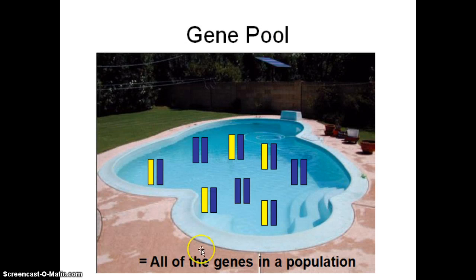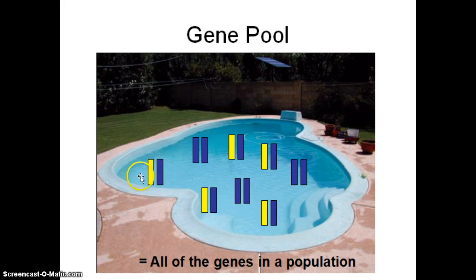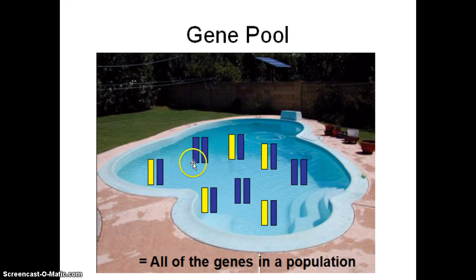The gene pool definition is all the genes in a population. What I tried to show here is that this particular person would be heterozygous for this trait — these are the two alleles this person is contributing to the gene pool. Someone like this would be homozygous for this trait, and we don't really know if it's homozygous dominant or homozygous recessive, but these two alleles are what this person is contributing to the overall gene pool.